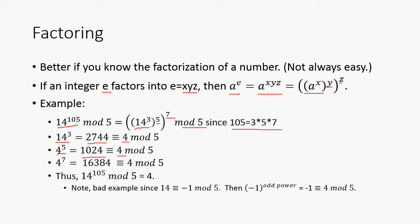Again, we can use this 4 mod 5 result and raise that to the 7th power, and we're going to get 16,384, which is 4 mod 5. Thus 14 to the 105 is going to be 4 mod 5.